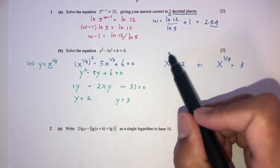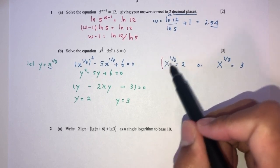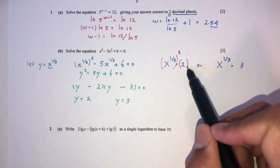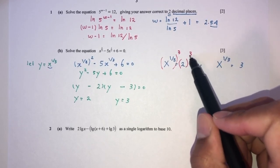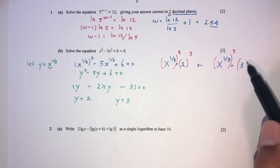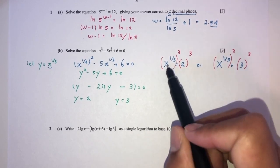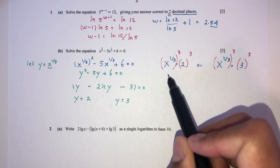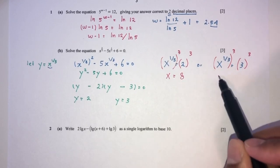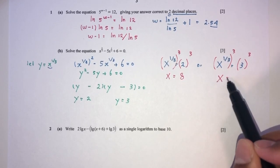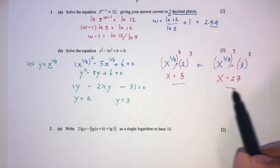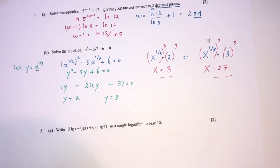To get x, apply the power of 3 to both sides. That gives x equals 2 cubed which is 8, or x equals 3 cubed which is 27. So we have x equals 8 and x equals 27 as your answers for question part B.